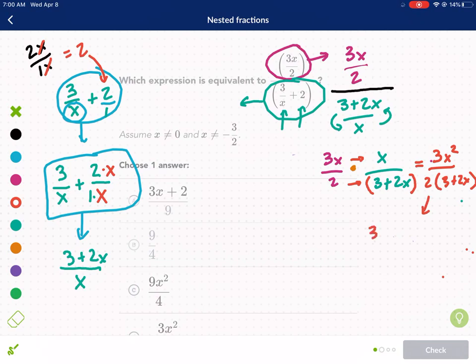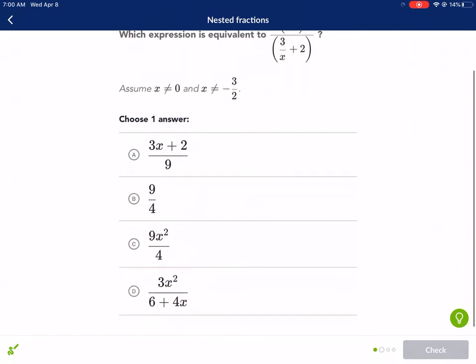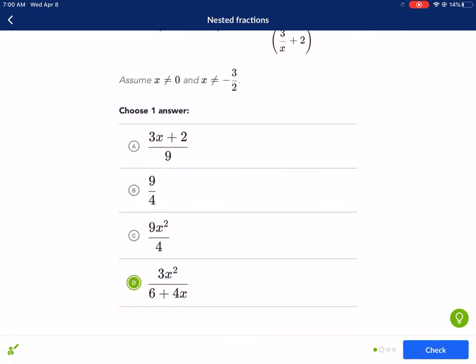Let's simplify this. 3x squared over 2 times, let me show the distribution here, 2 times 3, which is 6, plus 2 times 2x, which is 4x. Now I just need to find this answer, and I'm guessing it's d. I see 3x squared for d. And there we go. There's our answer.